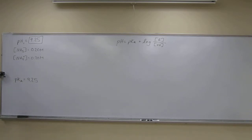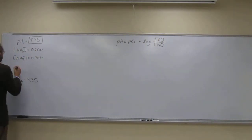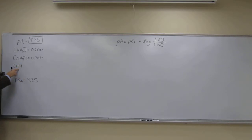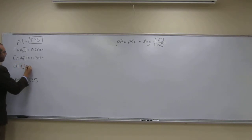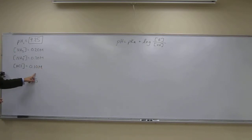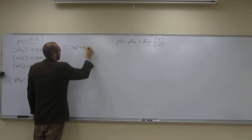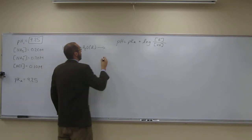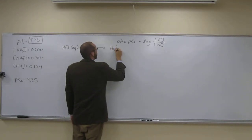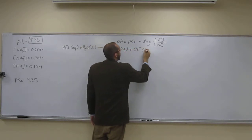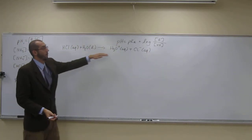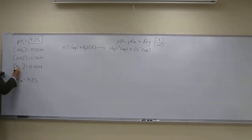Now for part two: what's the pH after the addition of 10 mils of 0.10 molar HCl? Remember, HCl fully dissociates, so the concentration of HCl equals the concentration of H3O+. It's a strong acid with a forward arrow, giving H3O+ plus Cl- aqueous. We have a one-to-one ratio, so we can just use H3O+.